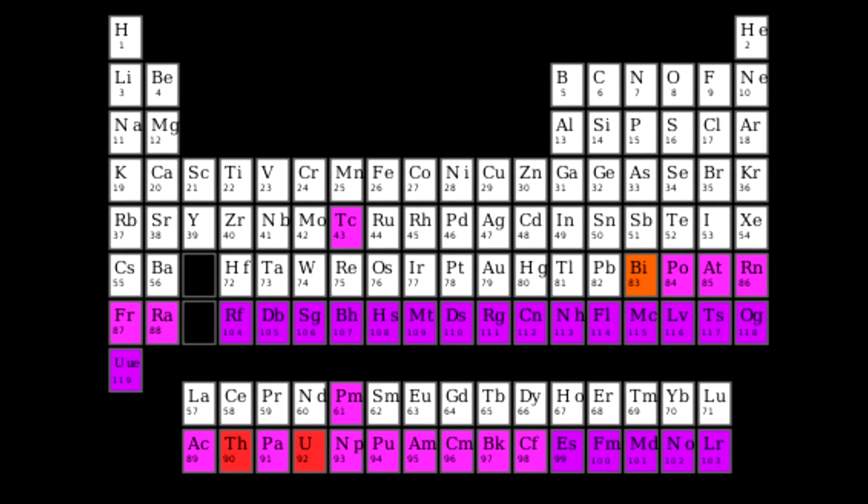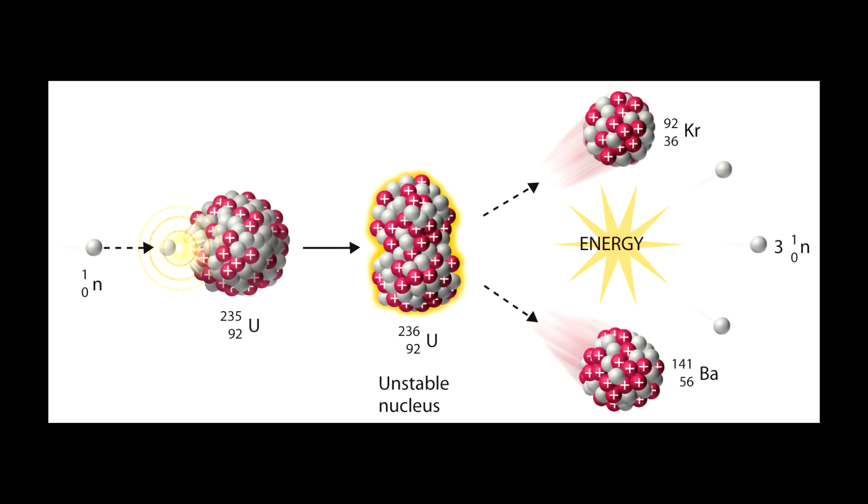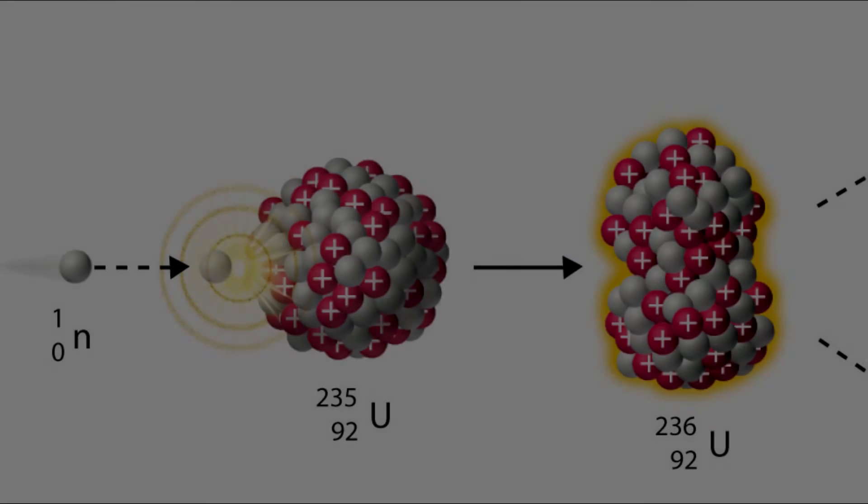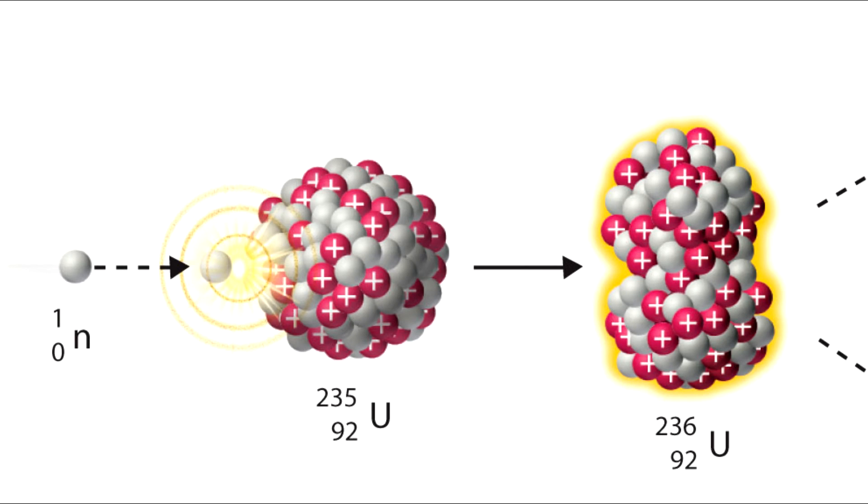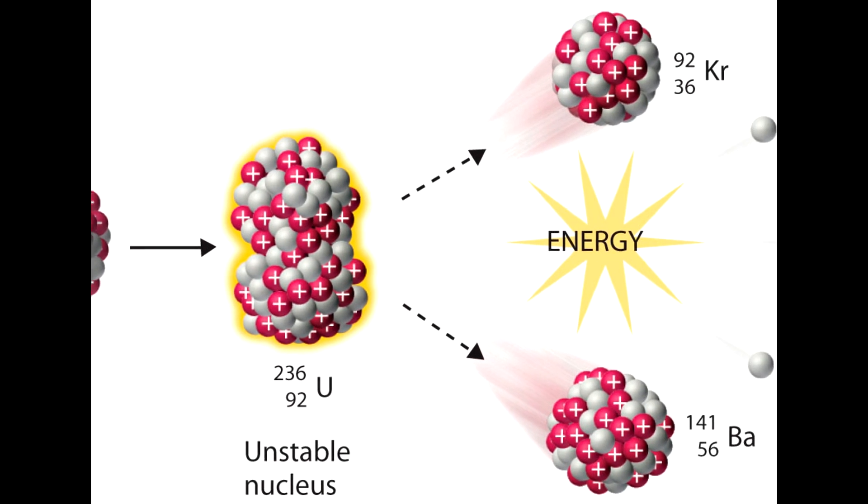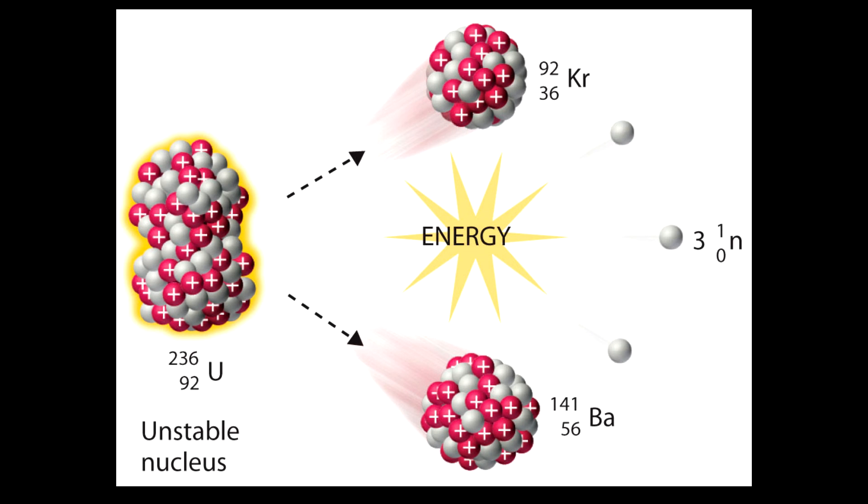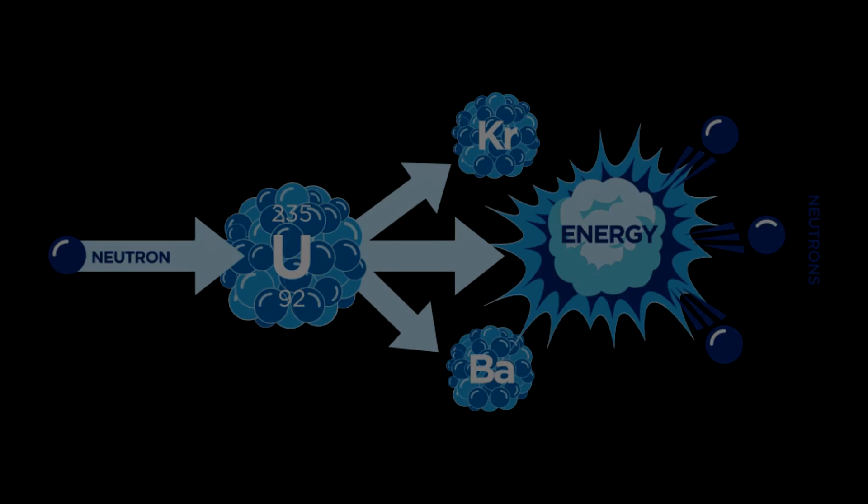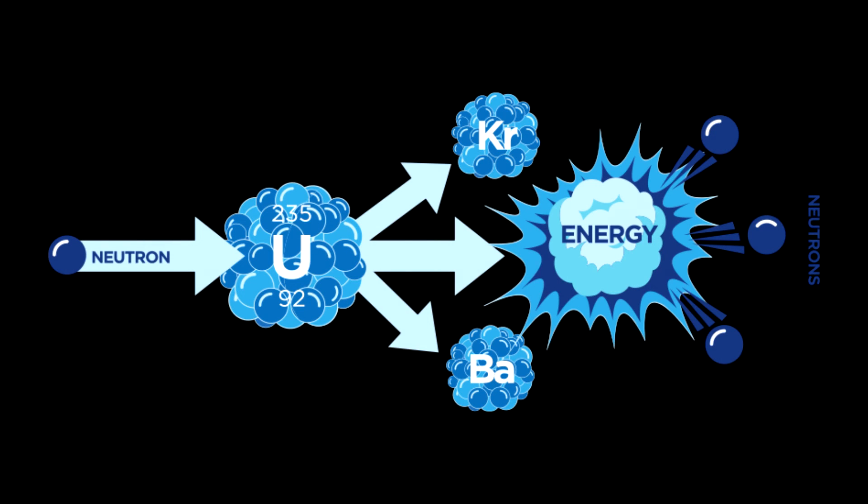The heavier first stuffs are all highly light-roddish, and therefore are not found in the green world. Some of the higher samesteads are splitly. That is, when a niterbit strikes a kernel of one, as for showdeal ymirstuff 235, it bursts into lesser kernels and free niterbits. The latter can then split more ymirstuff 235. When this happens, weight shifts into work. It is not much of the whole, but nevertheless, it is awesome.